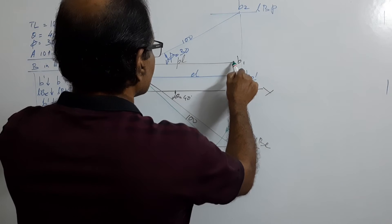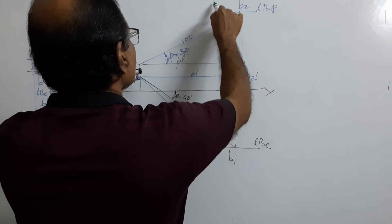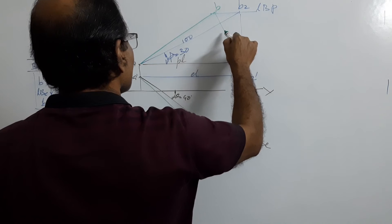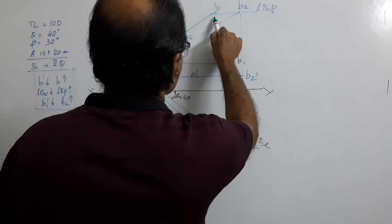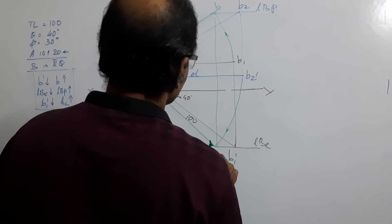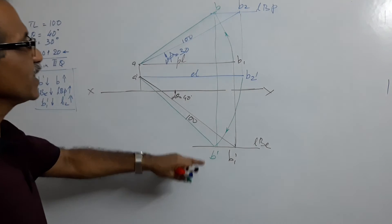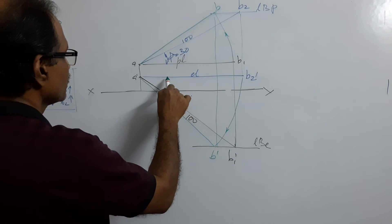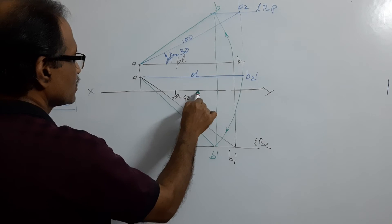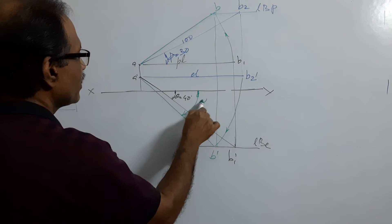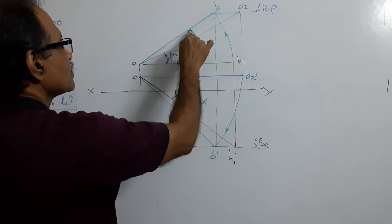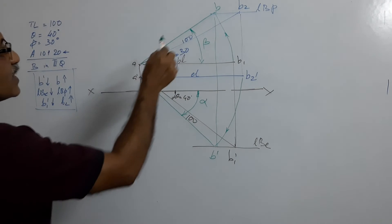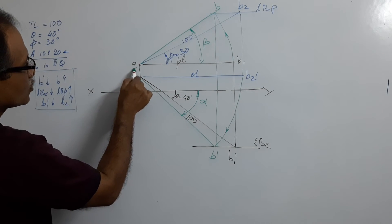Cut an arc at b. After drawing, if you draw a projector through b, this gives b dash — that is b. This is alpha and this is beta. Then the traces: the plan, when extended, will cut XY at a point.